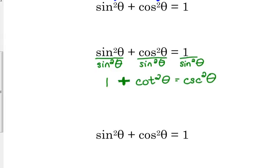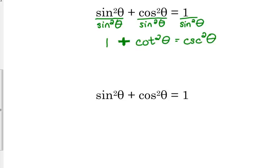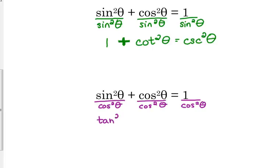To get the other identity with tangent squared plus one, instead of dividing by sine squared, I'm going to divide everything by cosine squared. Sine squared divided by cosine squared is tangent squared. Cosine squared divided by cosine squared is one. And one over cosine squared is secant squared. So we get tangent squared plus one equals secant squared.